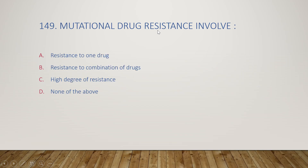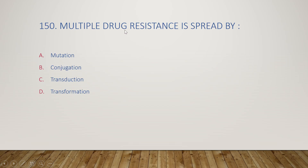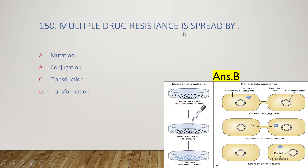The next question: mutational drug resistance involves resistance to one drug, resistance to a combination of drugs, high degree of resistance, or none of the above? The right answer is option A, resistance to one drug. Multiple drug resistance is spread by mutation, conjugation, transduction, or transformation? The right answer is option B, conjugation. An R factor (resistance factor) plasmid can be transferred through pili by conjugation to a recipient cell, providing drug resistance.